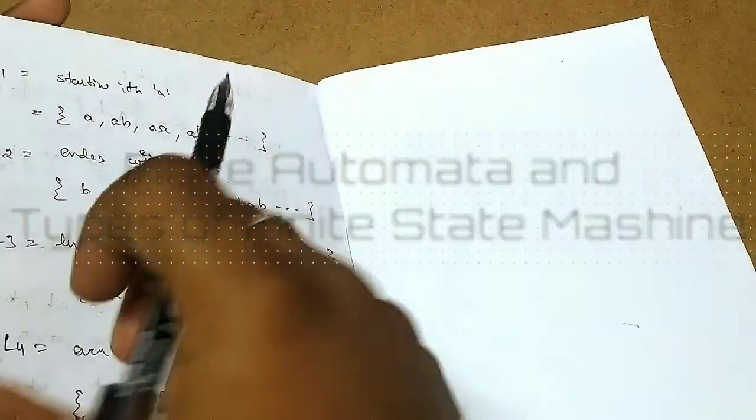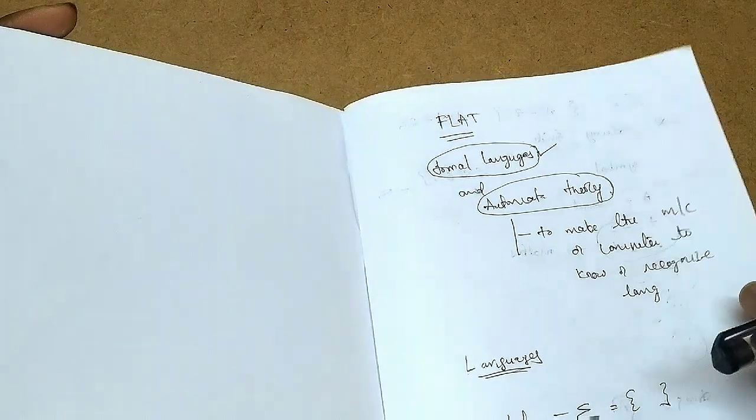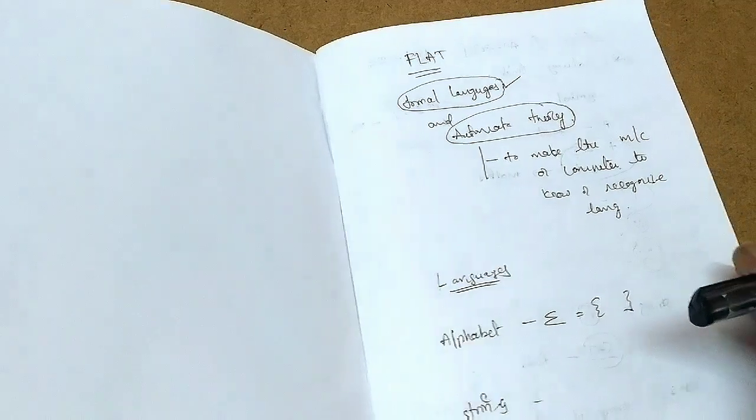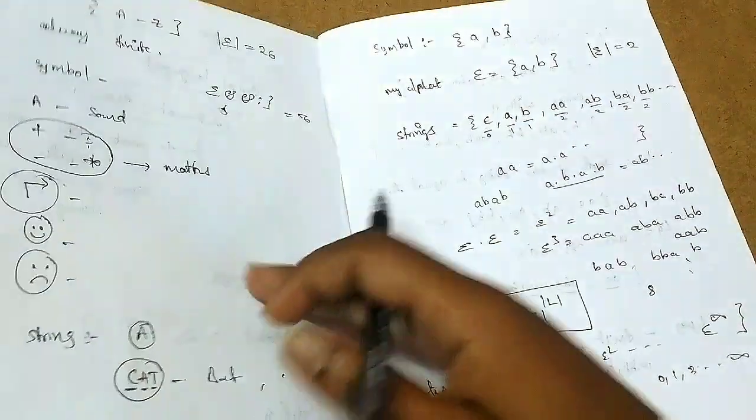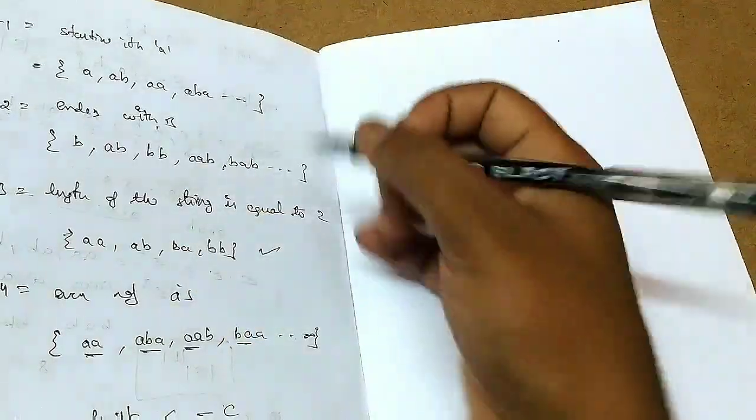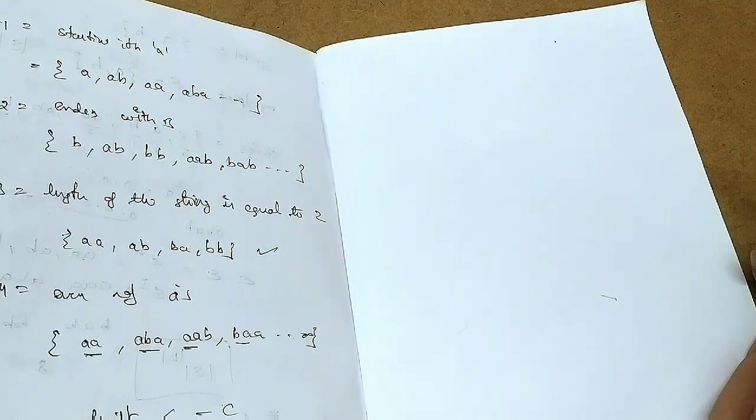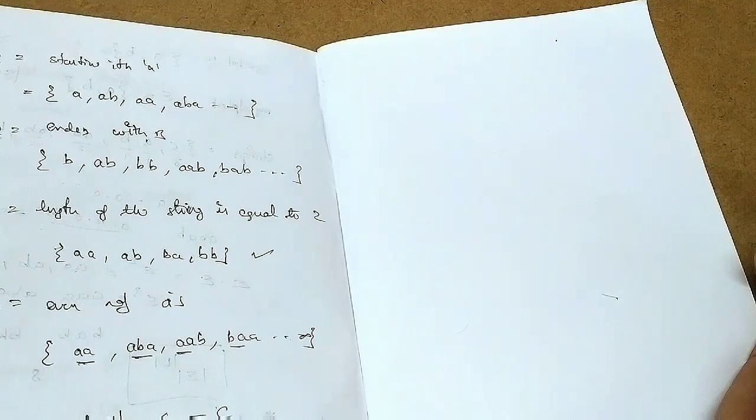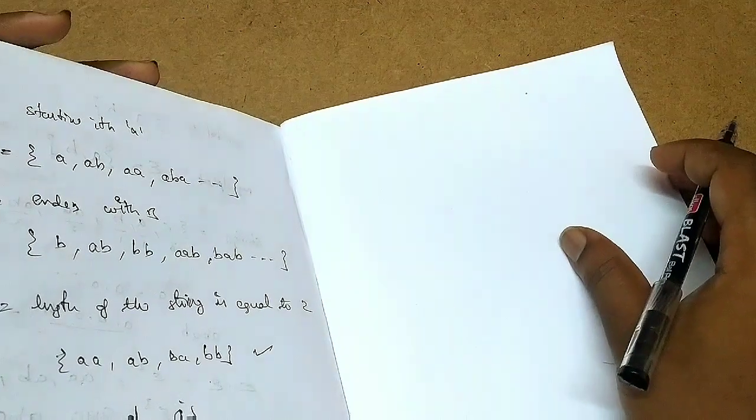In previous classes, we have studied about what is finite automata and what are their basics. Basics about what is symbol, what is alphabet, what is language and how to create a portable language. We created these four languages. If you didn't see the previous videos, just go back and come to this video. You might be so clear.